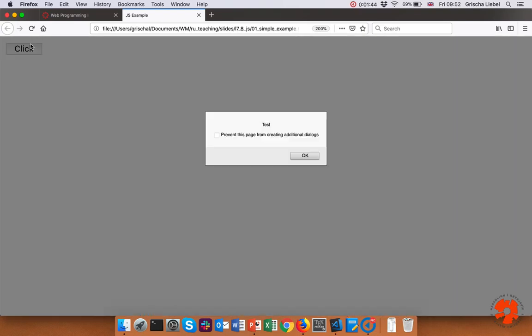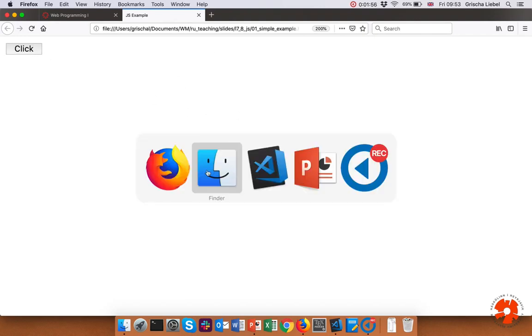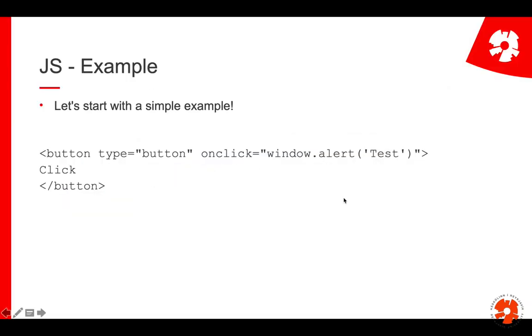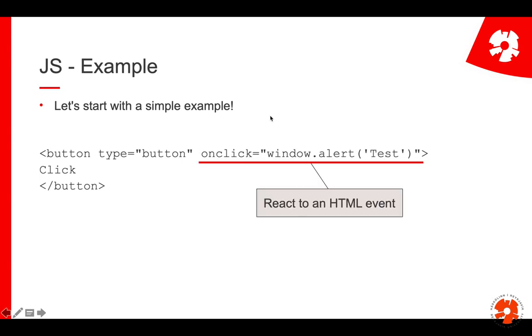I can click OK and it disappears. If I do it again, it happens. Firefox already says please block alert windows from this — it's annoying. So now nothing happens. That's a browser functionality; it has nothing to do with what we just programmed. Basically, what we did is put JavaScript into the HTML in an attribute. This means we are reacting to an HTML event — the onclick event. This is already an example of what event-driven means: we react to a user event.